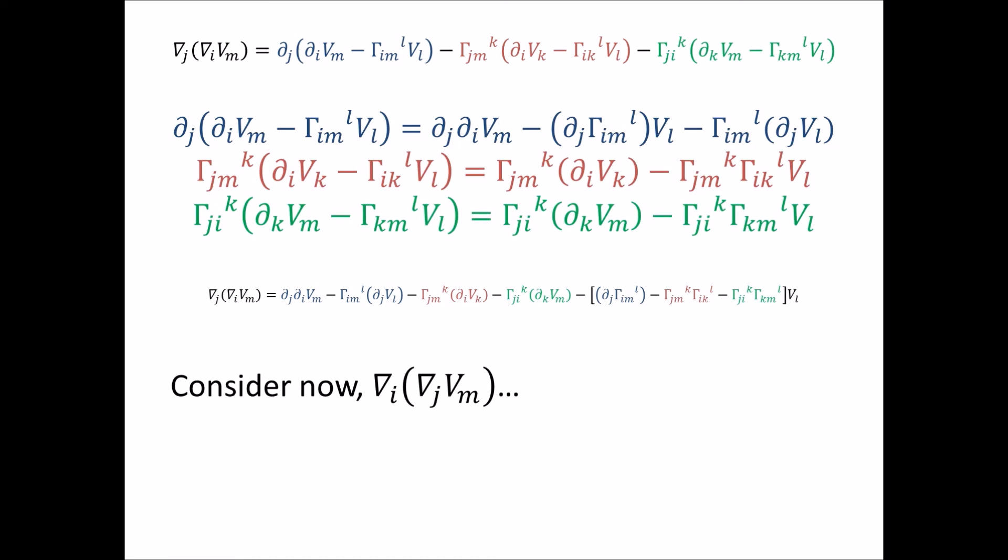So now what we consider is the same kind of process we just did. But we changed the order of covariant differentiation. And unlike the covariant derivative, those operations aren't going to commute. So we're going to get a different expression when we switch the index of covariant differentiation.